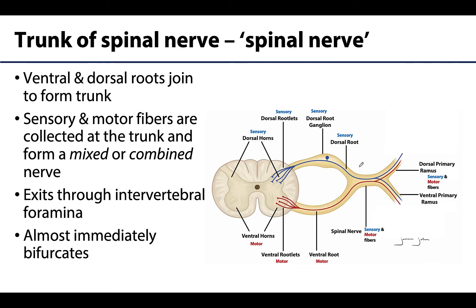At about the level of the intervertebral foramen, the dorsal and ventral roots will join to form the trunk of the spinal nerve, often just referred to as the spinal nerve — even though this whole complex is really the spinal nerve. At this point, there are both sensory, as you can see in blue here, and motor fibers in the trunk. This is often referred to as a mixed or combined nerve — not purely afferent or purely efferent.